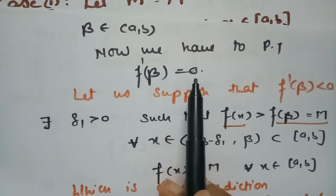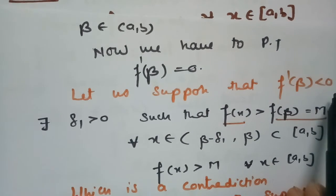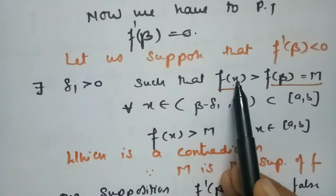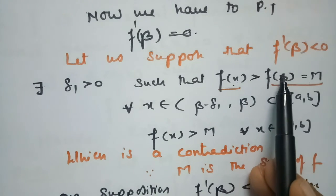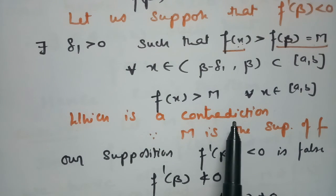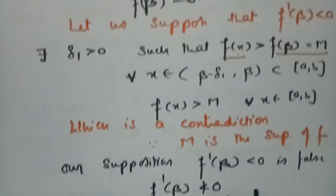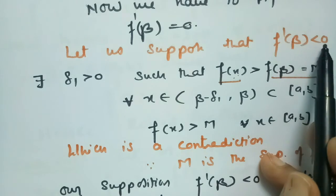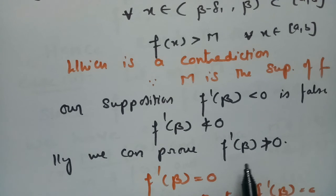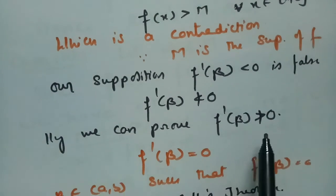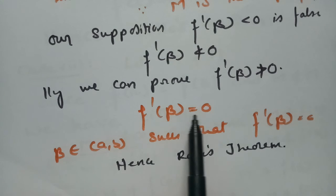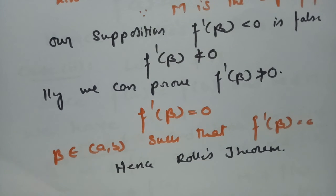Suppose f'(β) < 0. Then f(x) > M for some x, which contradicts M being the supremum of f. So f'(β) is not less than 0. Similarly f'(β) is not greater than 0. Therefore f'(β) = 0, and since β belongs to open (a,b), this is exactly Rolle's theorem. Hence Rolle's theorem is proved.